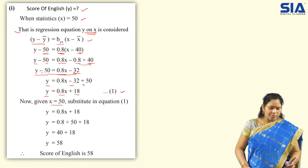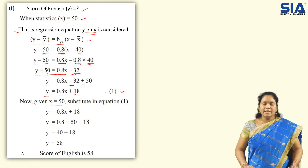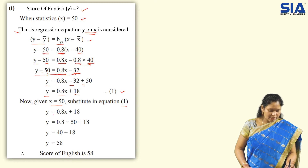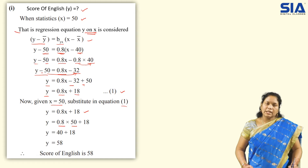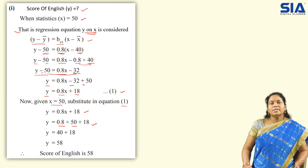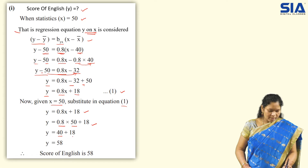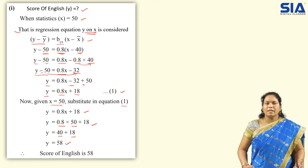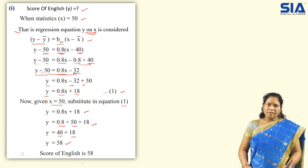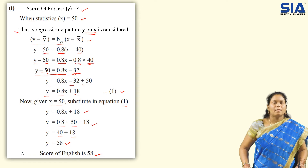Now substitute the given value. They have given x = 50 (statistics score). Substituting into equation 1: y = 0.8(50) + 18 = 40 + 18 = 58. Therefore, since y is the English score, the score of English is 58.